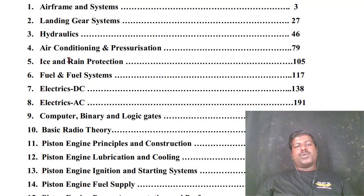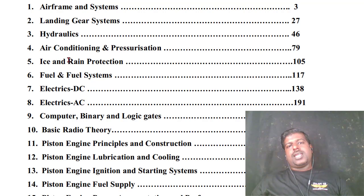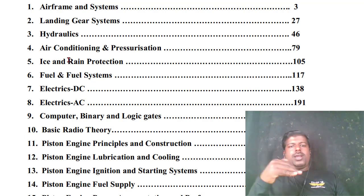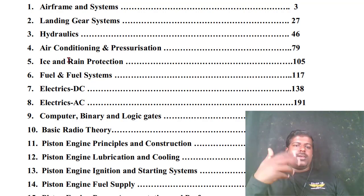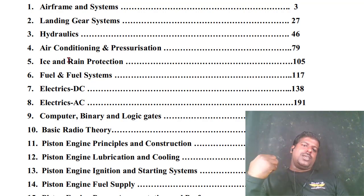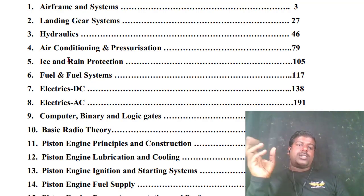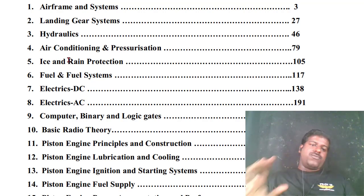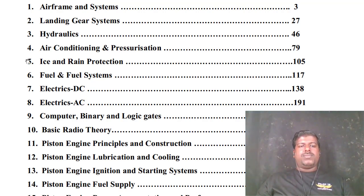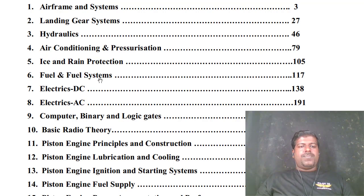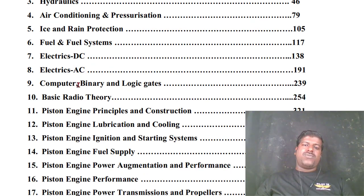Then comes Ice and Rain Protection. Ice accretion can occur on an aircraft body, wings, etc., which can hinder the performance of an aircraft. So we have to provide protection from this, and we learn about that in this chapter.